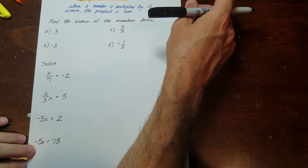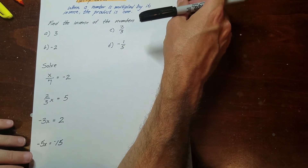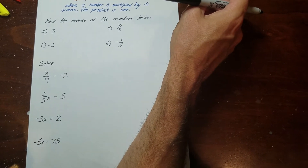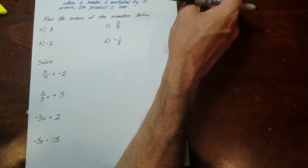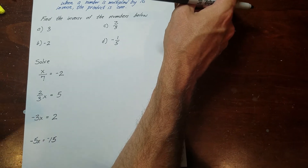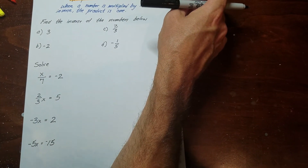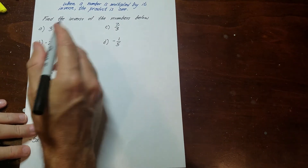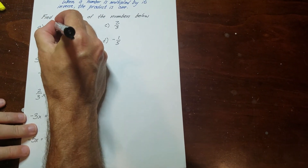When you find the inverse of a number, it's not the opposite. A lot of times if I say find the inverse of 3, people say that's negative 3. That's the opposite, that's not the inverse. The inverse of 3 is 1 third.